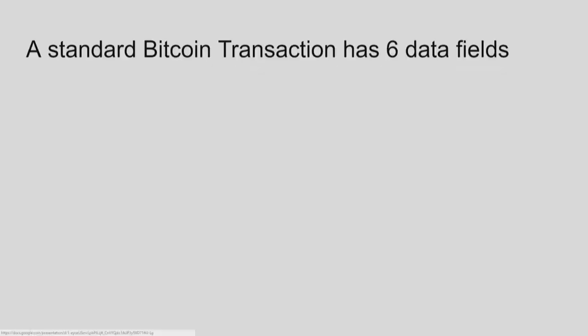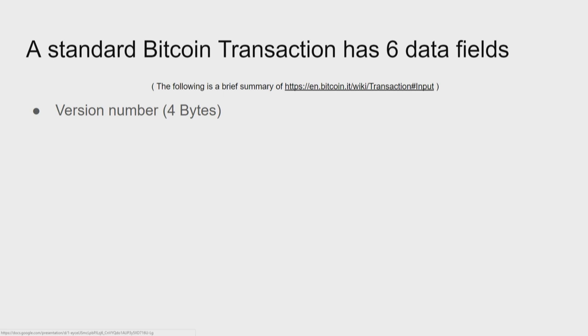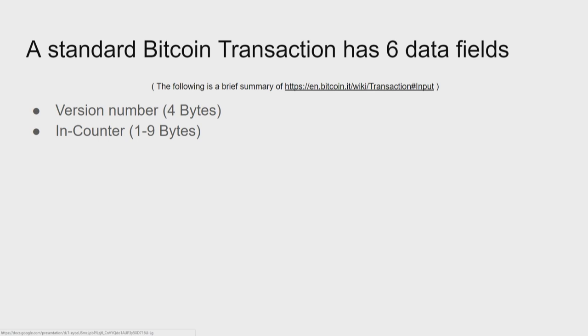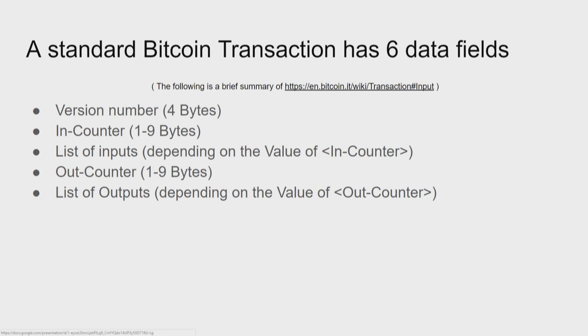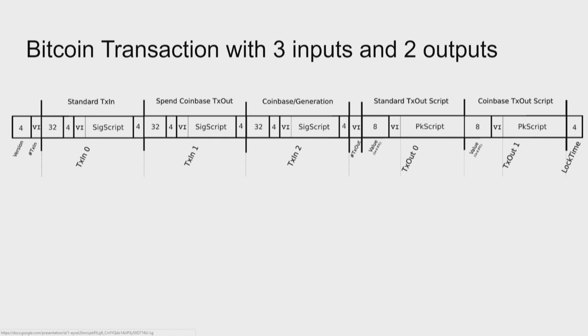As a mathematician and computer scientist, when I look at some protocol, I really look at the data being transmitted. This is a brief summary of the Bitcoin Wiki article about transactions. If you look at a Bitcoin transaction, it has six data fields: the version number, the input counter, a list of inputs, an output counter, a list of outputs, and a locktime. This is how a Bitcoin transaction with three inputs and two outputs would look like. The data mainly consists of executable scripts—most of this transaction is just scripts.